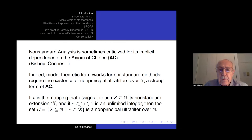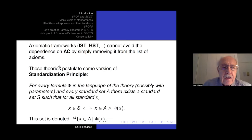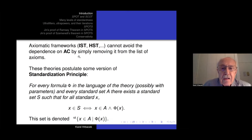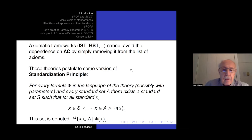The other approach to non-standard analysis is axiomatic. For example, Nelson's IST is the best known. These non-standard set theories postulate the axiom of choice. We could, of course, drop it, but that doesn't solve the problem. The reason is that they also postulate some version of the standardization principle. The standardization principle is a generalization of comprehension or separation to arbitrary formulas in the language — not just epsilon formulas, but formulas with epsilon and ST.